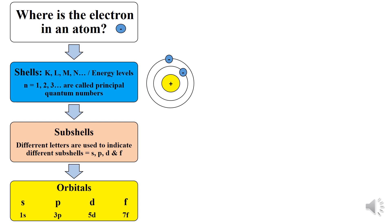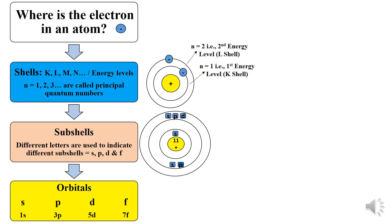The electrons are present in the shells or energy levels. When n equals 1, that is the first energy level, also given by the symbol K. When n equals 2, that is the second shell or second energy level, also given by the symbol L. Now within the shells you find the subshells, which are indicated by different letters: S, P, D and F.